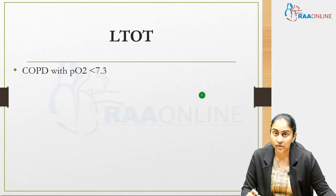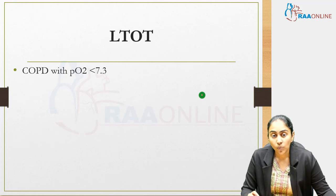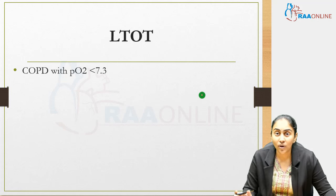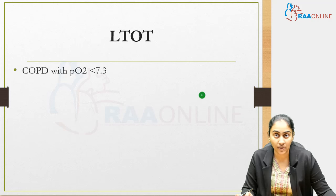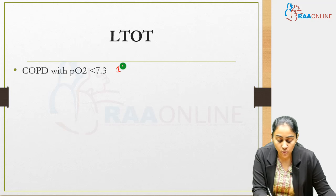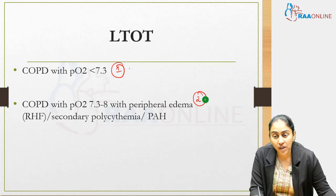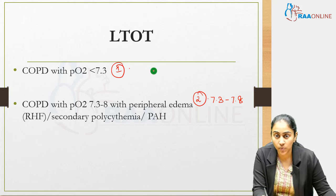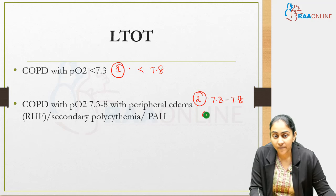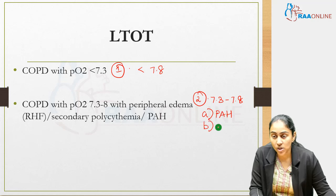Long-term oxygen therapy (LTOT) is again something important and frequently repeated. When do you prescribe LTOT in COPD patients? First, when PO2 is less than 7.3. Second, when PO2 is above 7.3 but the patient has one of the three P's: pulmonary artery hypertension, secondary polycythemia, or peripheral edema — basically cor pulmonale.